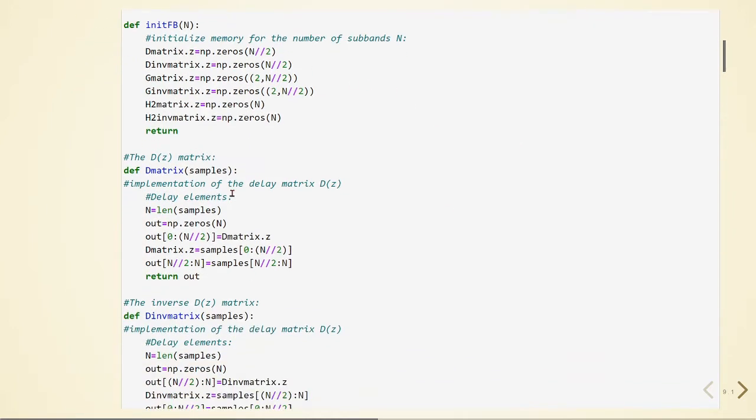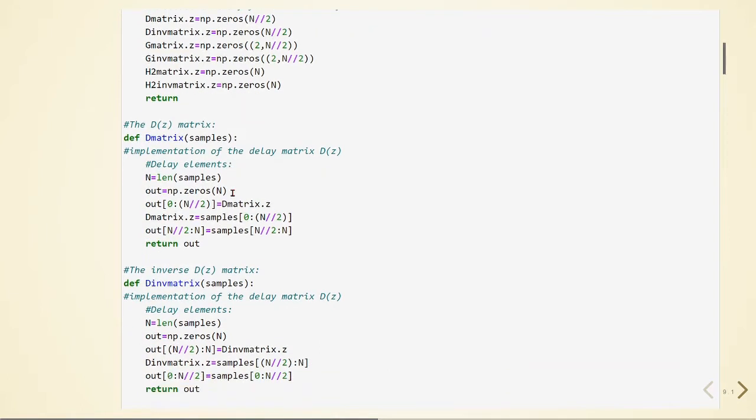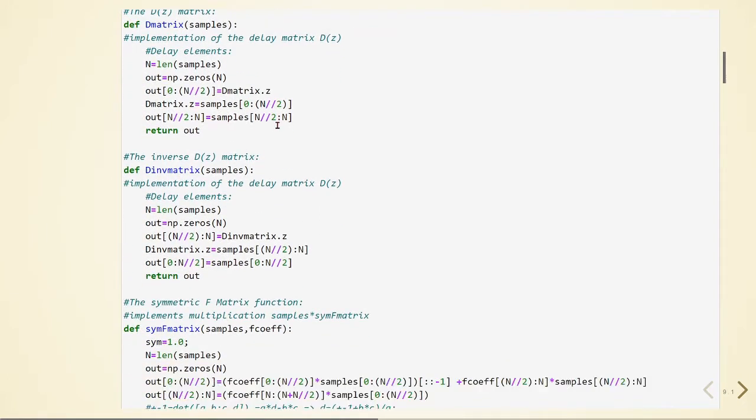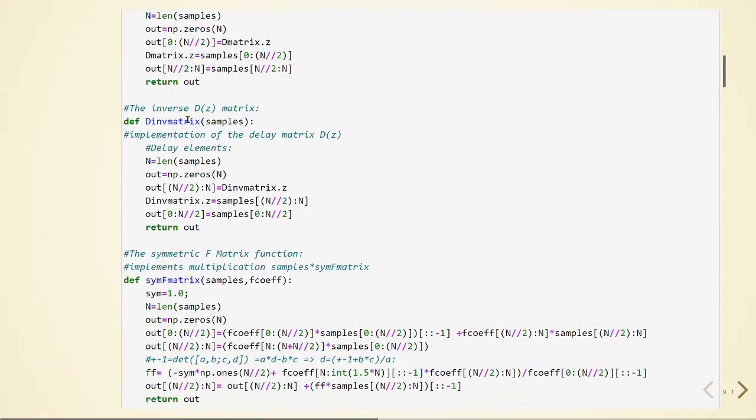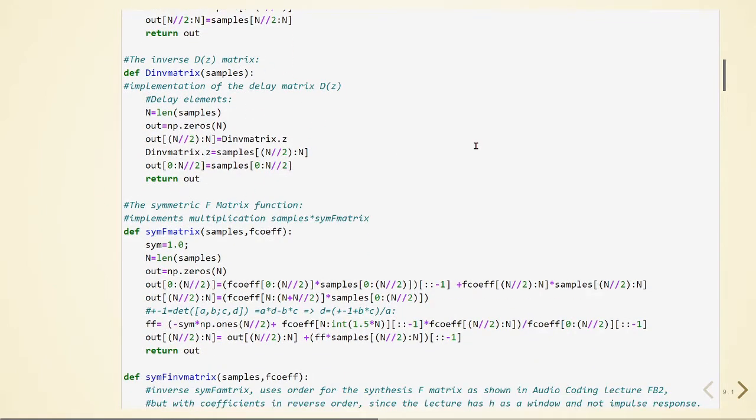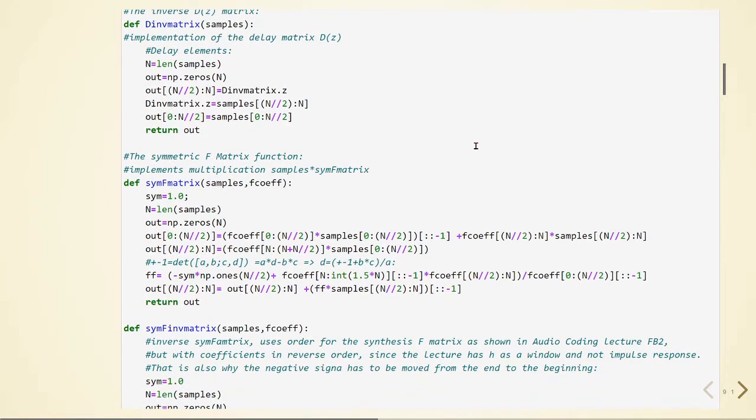Our delay matrix is the same implementation we used before for the other MDCT example. The same for the inverse and here we have a different function called the symmetric F matrix and this function implements the multiplication of the samples with some F coefficients.